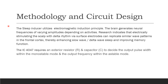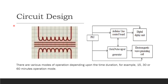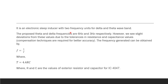The IC4047 requires an exterior resistor and an exterior capacitor to measure the output. An Artificial Sleep Inducer consists of a power supply unit, a pulse or clock signal generator, an Arduino control board to control the generated signal, and a digital display unit to display the output to the viewer. It uses coils to create electromagnetic waves of low frequency. There can be various modes of use depending upon the time, namely 50, 30, or 60 minutes.